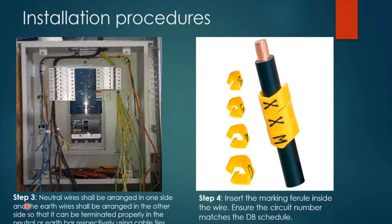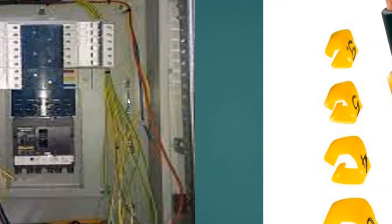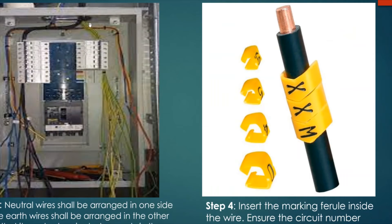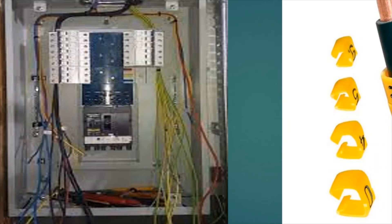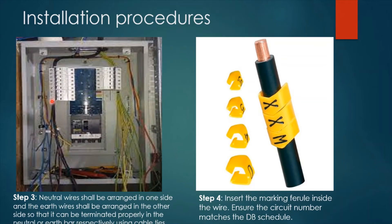Step three is to arrange the neutral wires and the earth wires on both sides of the distribution board according to their terminals. For example, the earthing wires are brought to the earthing terminal side, and the neutral wires are brought to the neutral bus bar on the other side. Step four is to insert the marking ferrule inside the wire, ensuring the circuit number matches the exact number mentioned in the DB schedule. For example, if the wire is protecting circuit number R1, you select a ferrule with the letter R and the number 1.